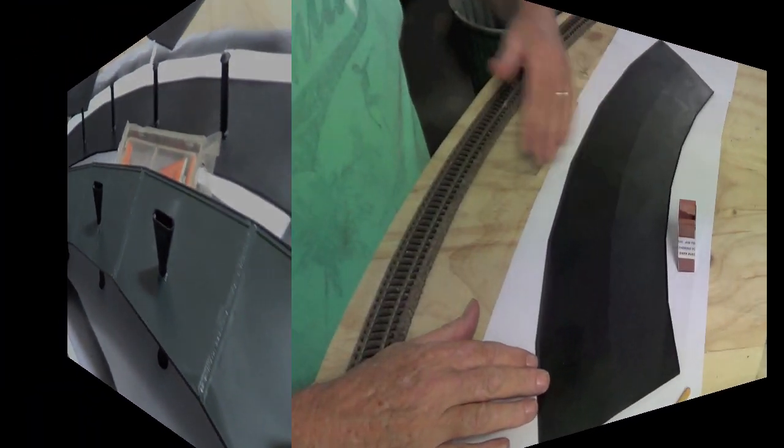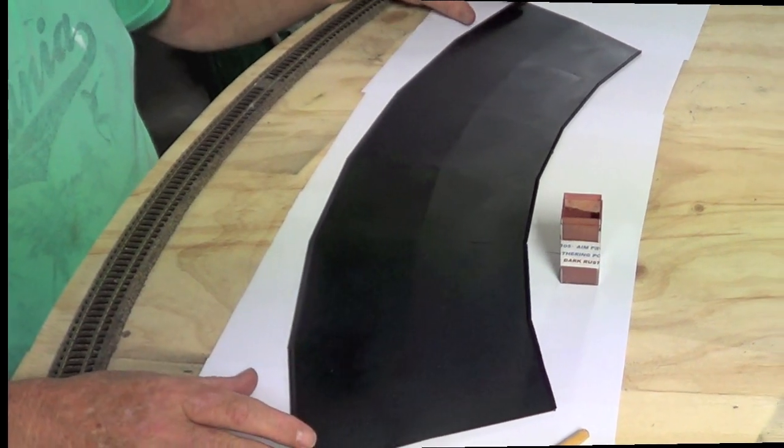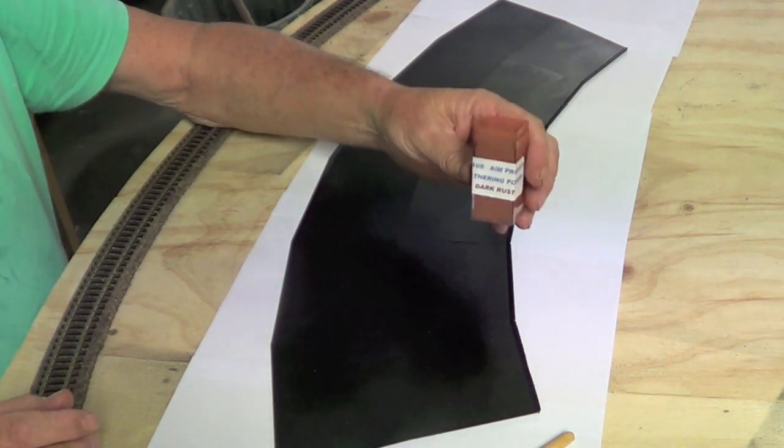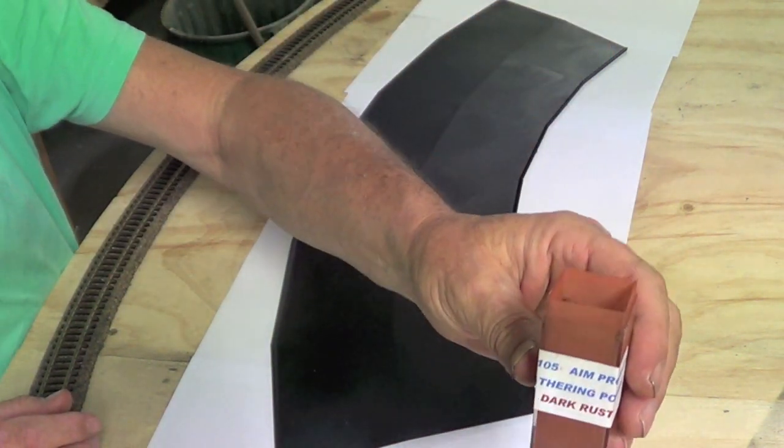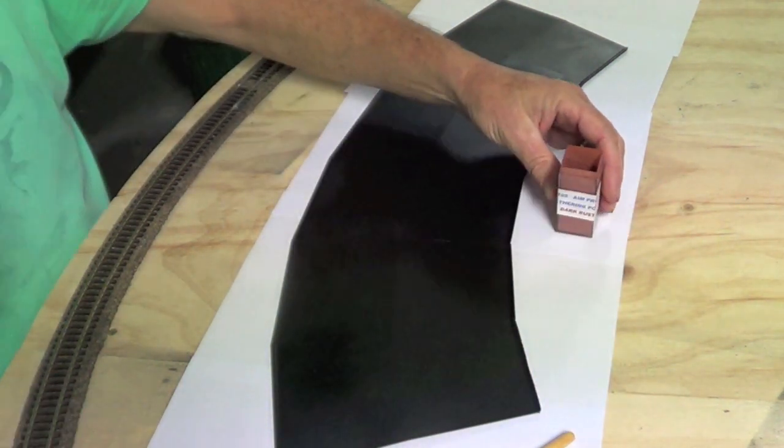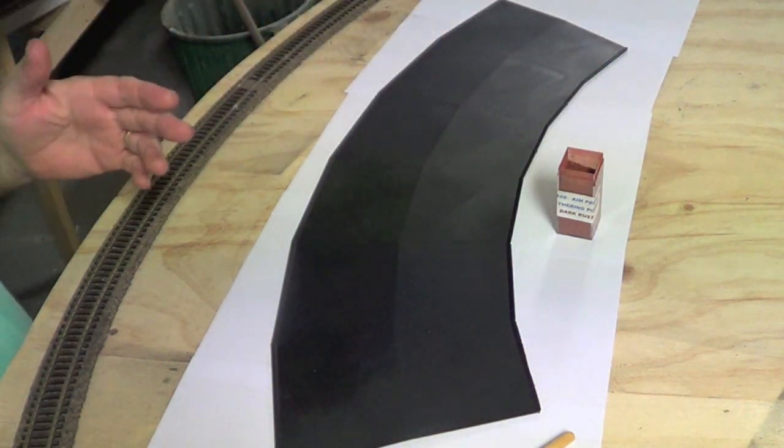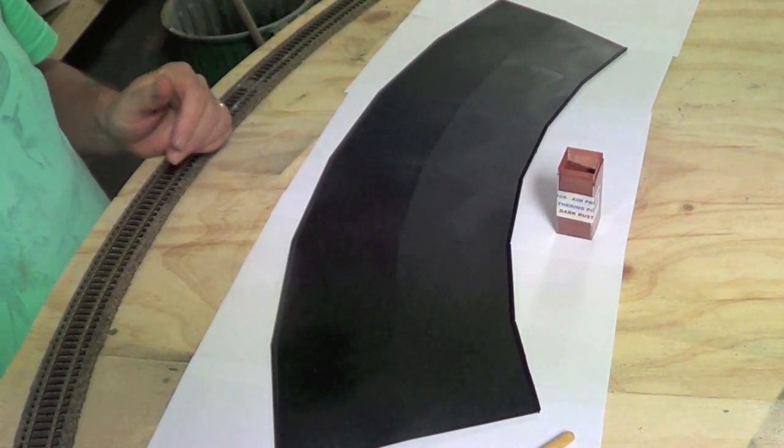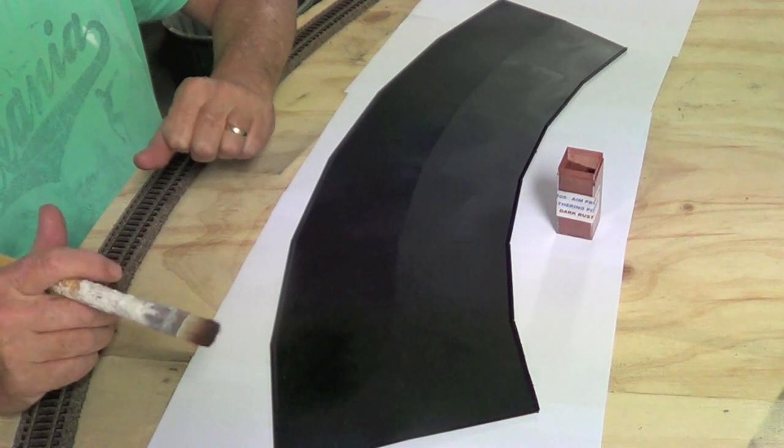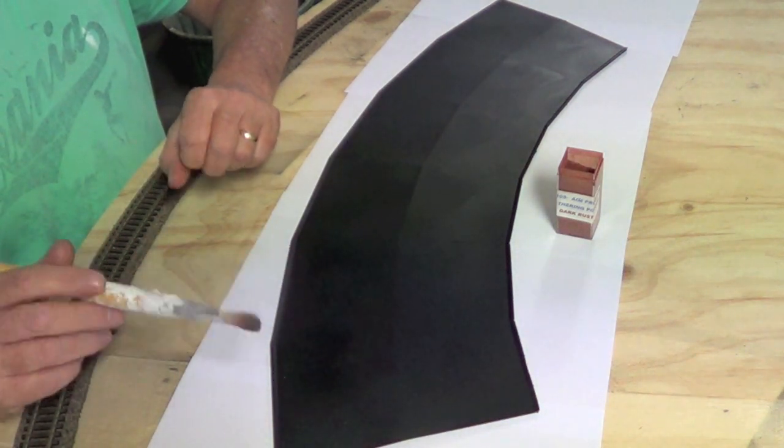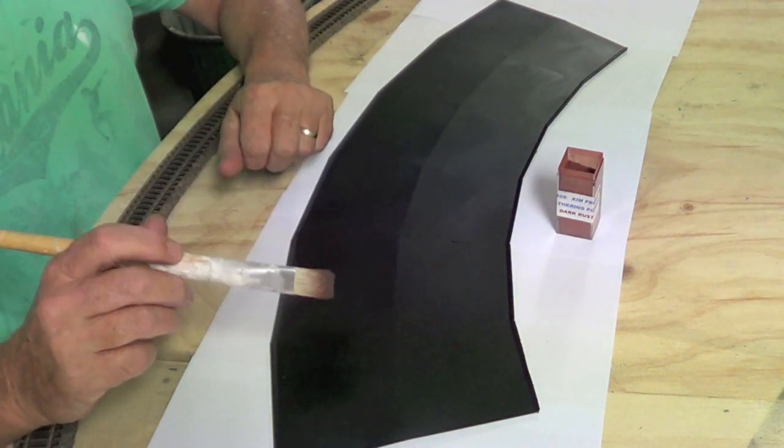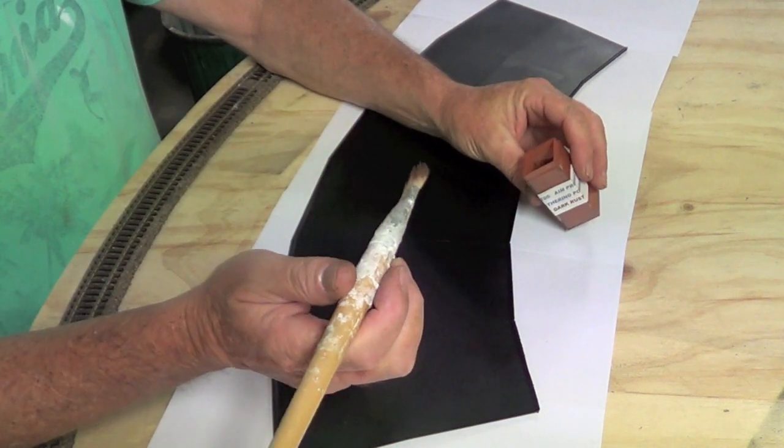Okay, I'm about to weather the roof now. I'm using powders again, so I'm using powders on everything on this. What I'm going to use this time is dark rust. Not to make it look rusty, but just to make it look old. The roof's obviously been there for years. It's the same process as all the other ones. I just put it on and brush it on with a brush. So we'll see what it looks like.